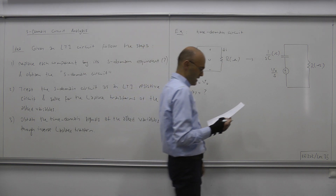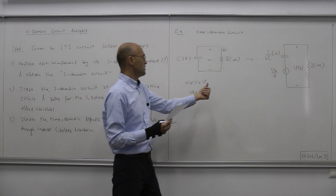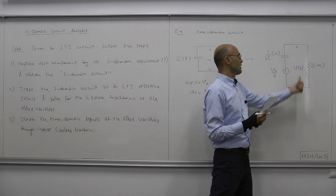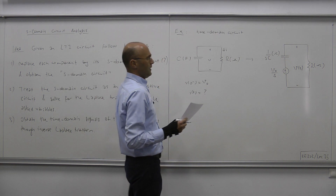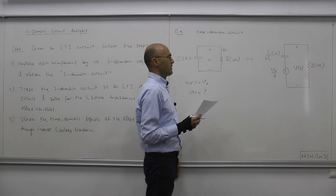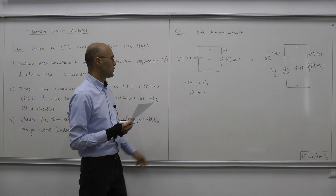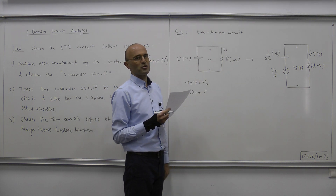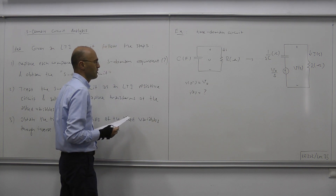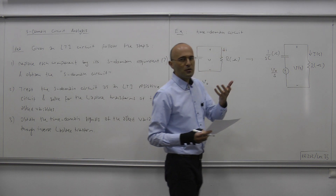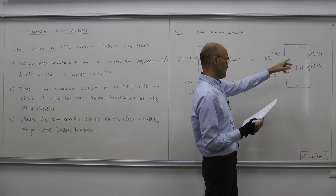In the time-domain circuit, we would solve a differential equation to find i(t). In the S-domain circuit, we treat it as an LTI resistive circuit — no differential equations. All components, whether capacitors, inductors, or resistors, are represented by impedances in ohms. For series components, the effective impedance seen by the source is the sum, and voltage dividing by that impedance gives us I(S).